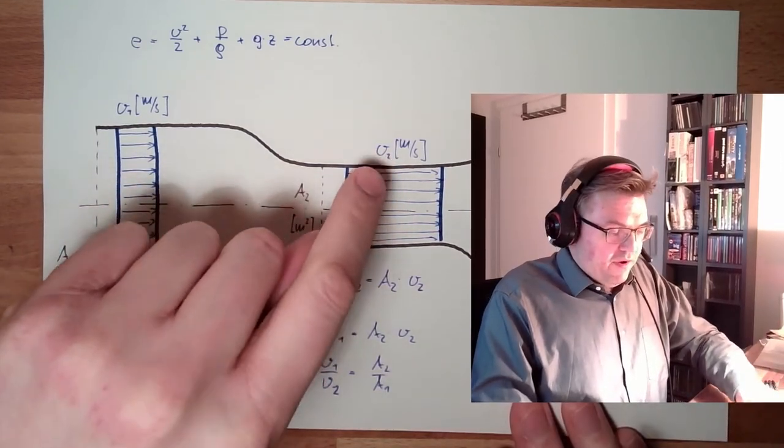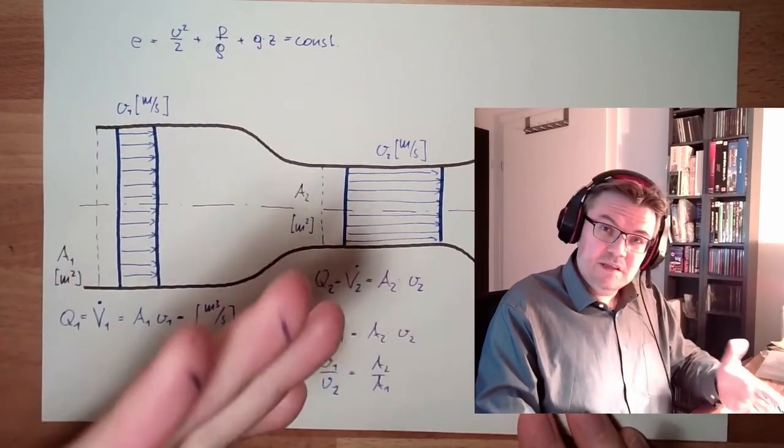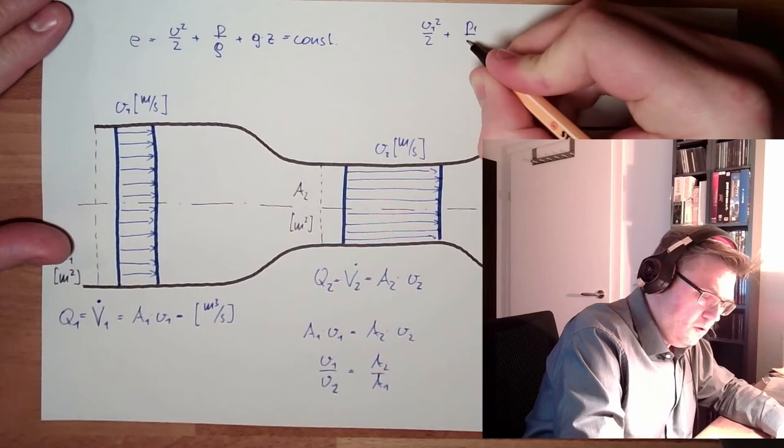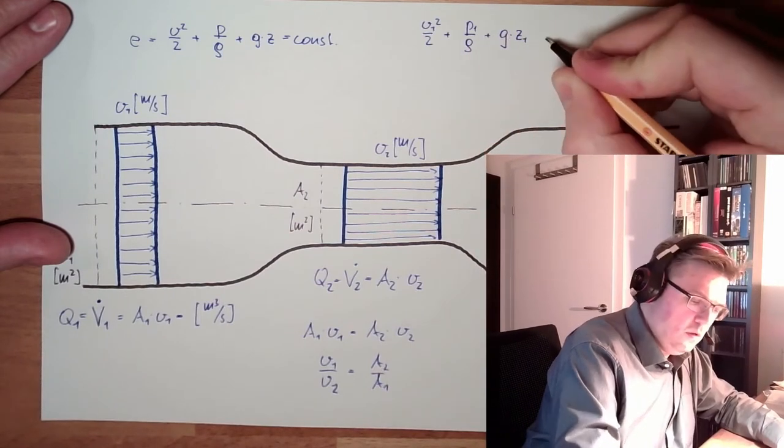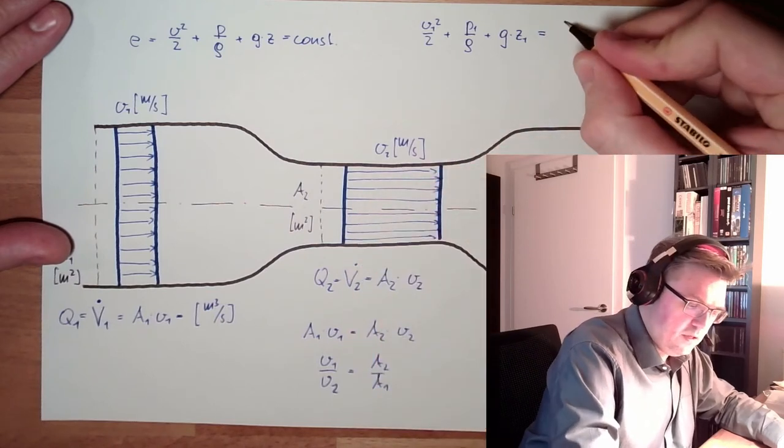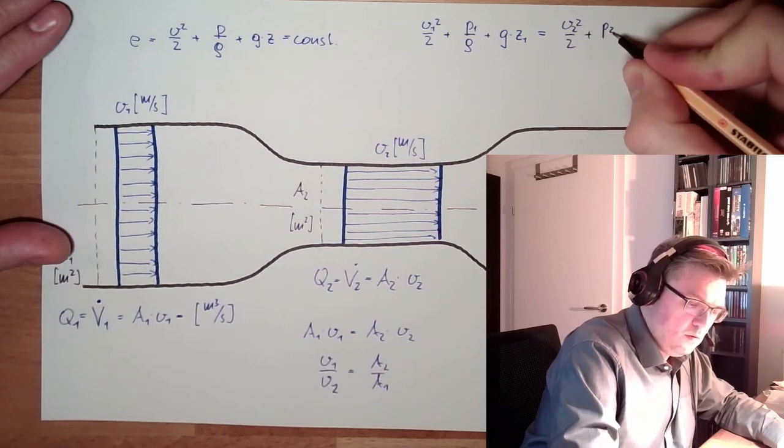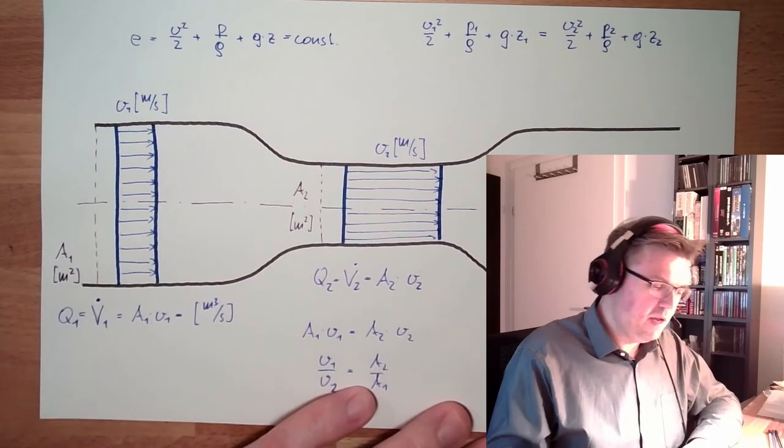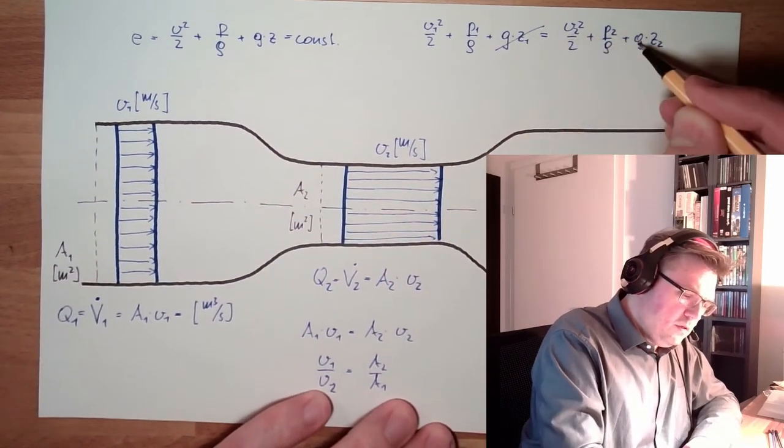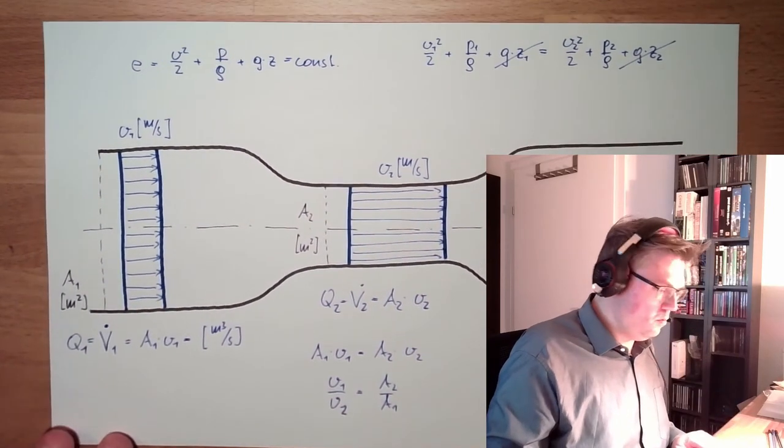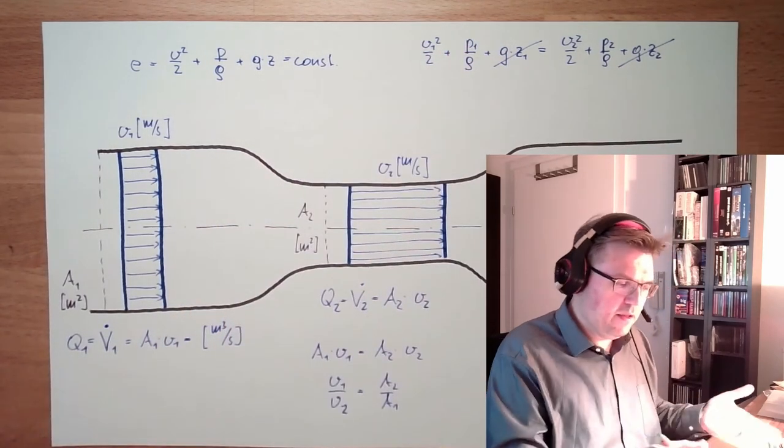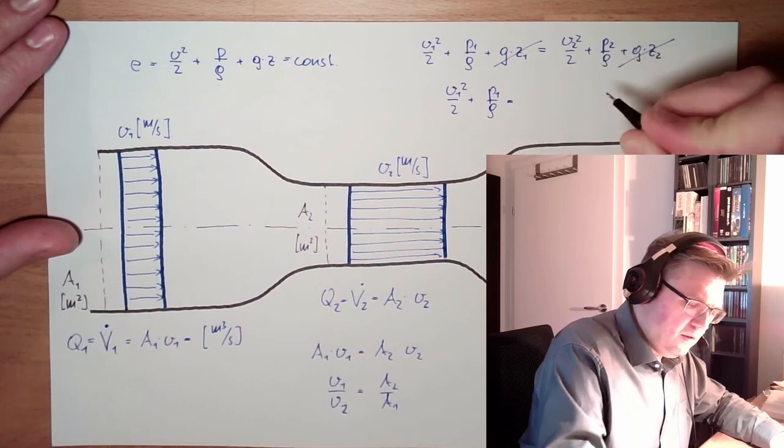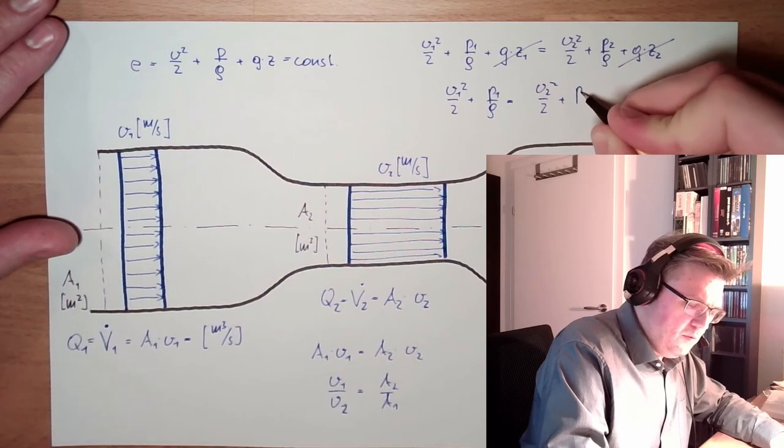This means if the velocity is now getting higher, something else here has to change that this is constant. So we have V1 squared half plus P1 plus Z1, and this must exactly be the same like here because the energy stays the same. What's with the sea level? The sea level is the same, so Z1 and Z2 are the same. So these two terms, gone, because I simply bring them to the other side. So what is left is V1 squared half plus P1 divided by the density.